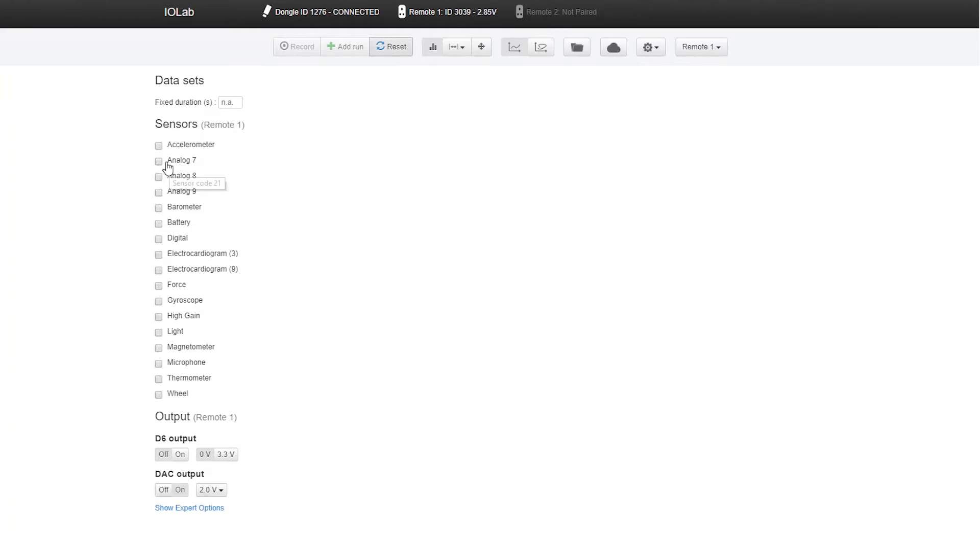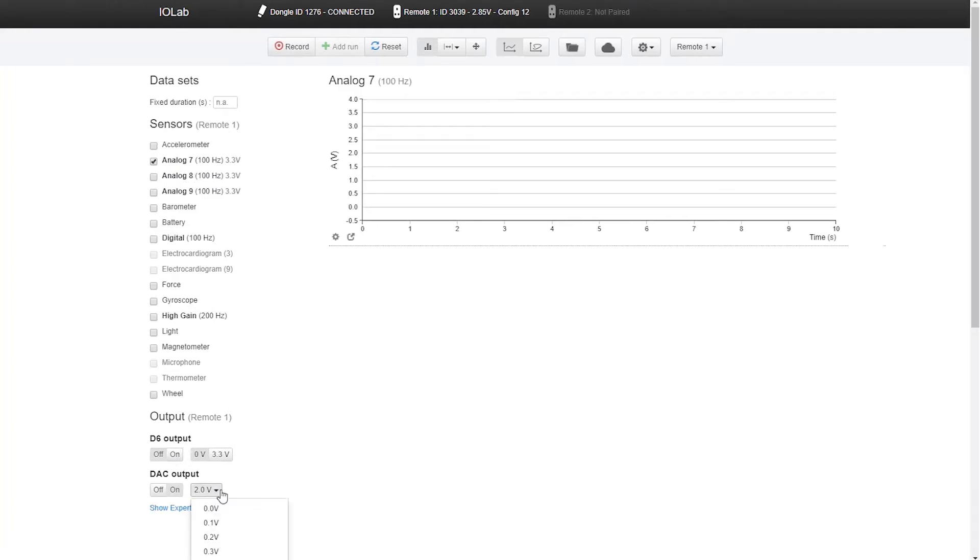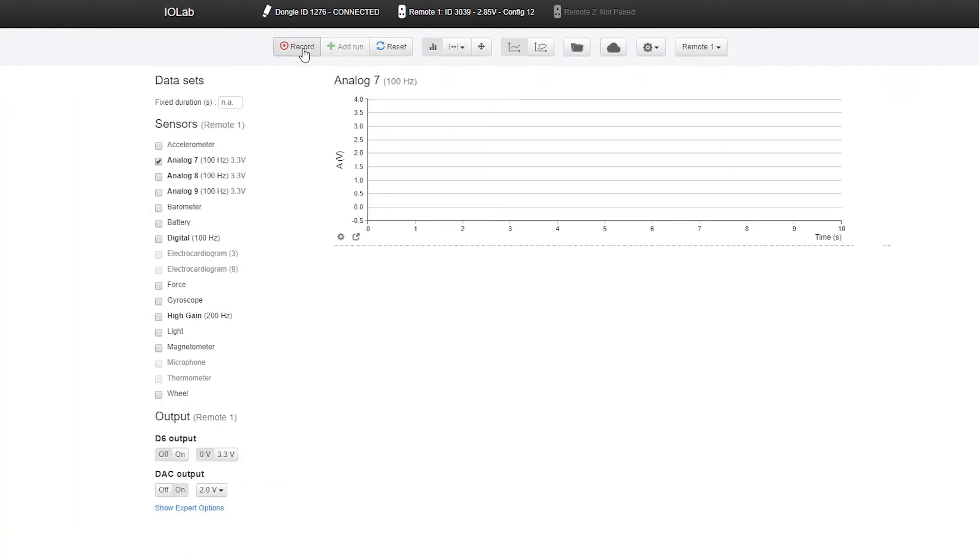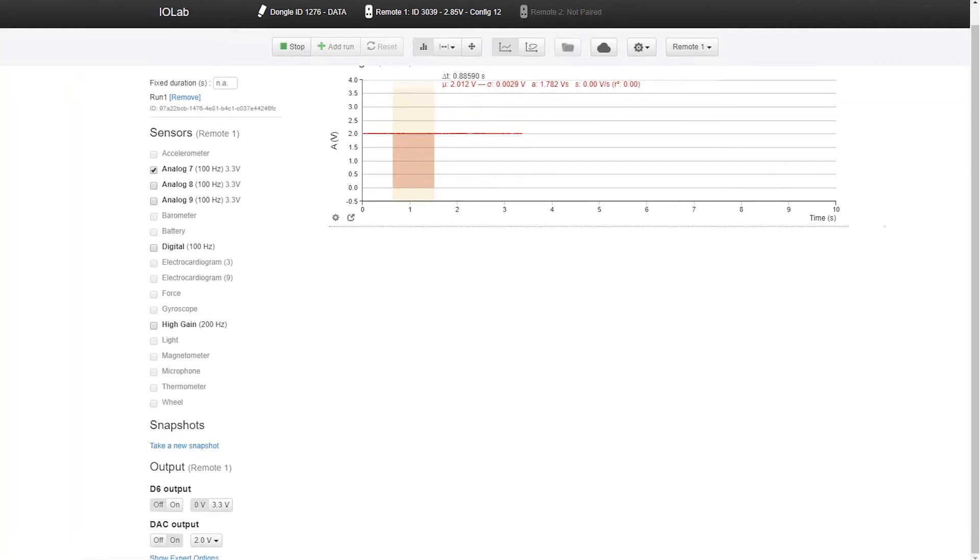I'm going to go over here, I'm going to select analog 7, I'm going to turn on the DAC output, and I've selected the DAC output voltage to be 2 volts, and now I'm just going to record. What you're seeing right now is 2 volts, not surprisingly.